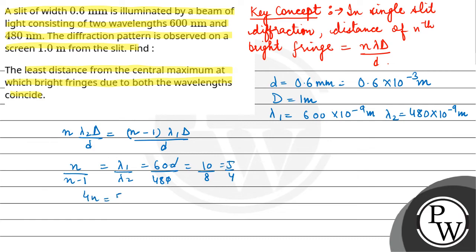So 4n equals 5n minus 5, which gives n equals 5.